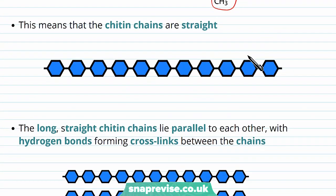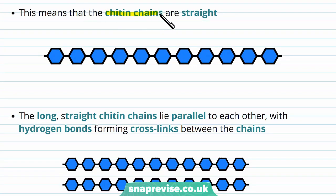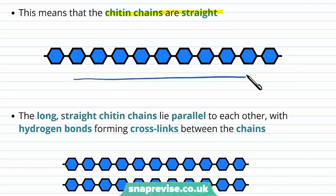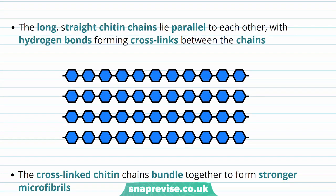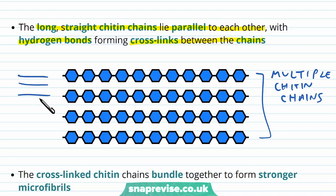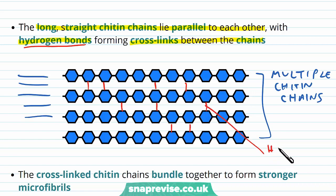Because of this inversion, just like in cellulose, the chitin chains that form are straight — otherwise they would be coiled up like in amylose. Because the chains are completely straight, these long straight chains can lie parallel to each other, with hydrogen bonds forming cross-links between those chains. Each hydrogen bond is quite weak, but overall the multiple cross-links found across the entire structure are very strong.